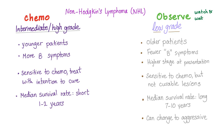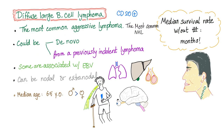Since diffuse large B-cell lymphoma is an aggressive lymphoma, it will be treated with chemotherapy. It is the most common aggressive lymphoma, CD20 positive, with a short median survival rate. It could be de novo or transformed from a previous indolent lymphoma.